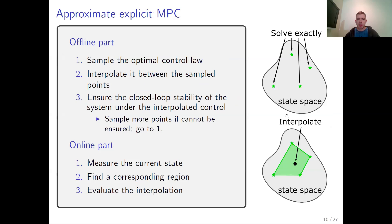Let's consider approximate explicit MPC. It has two parts: an offline part and an online part. During the offline part, we sample the optimal control law for some region of the state space, then interpolate this optimal control law between the sample points, and ensure that the system is still closed-loop stable under this interpolated control law. If we cannot ensure closed-loop stability, we need to sample more points until the interpolated control law provides closed-loop stability. During the online part, we find the region containing the current state and evaluate the interpolation.